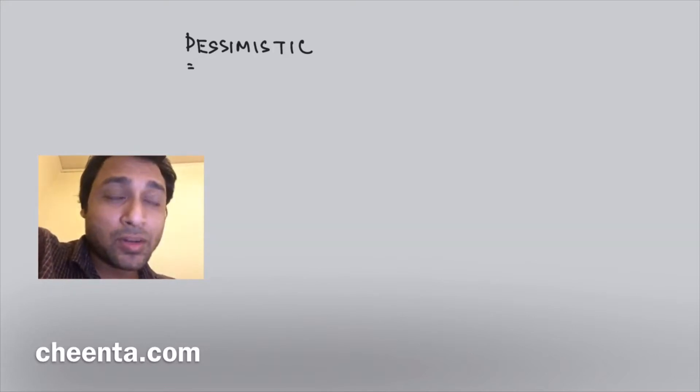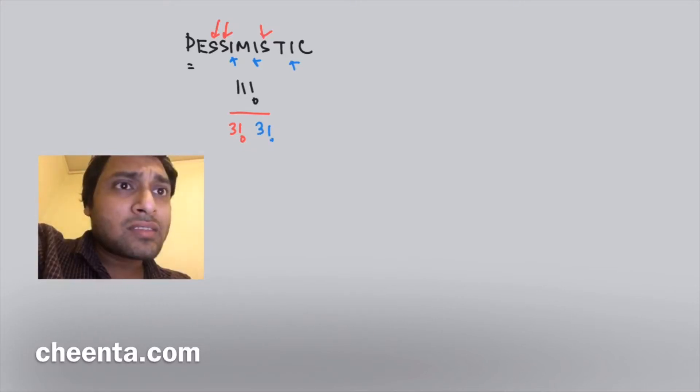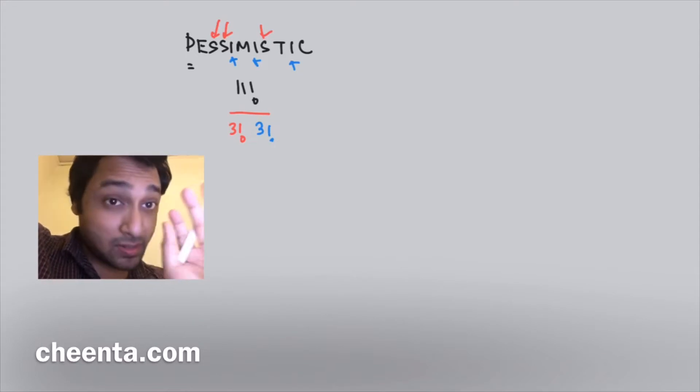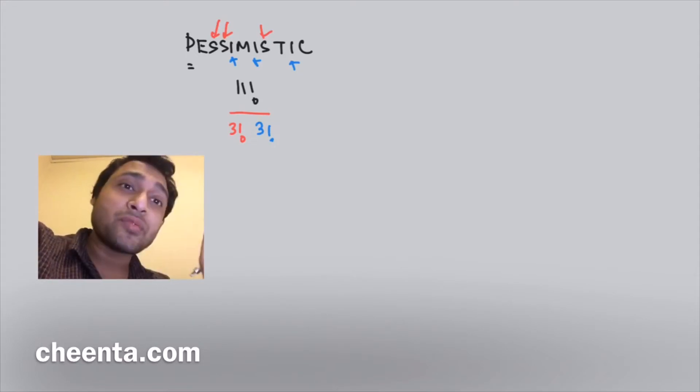So you do 11 factorial, but then you observe that there are repetitions. There are three S's, so you divide by 3 factorial. And you also have three I's, so you divide by another 3 factorial. This is the final answer if you were just looking at the number of ways to rearrange the letters of the word pessimistic.